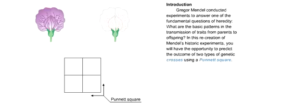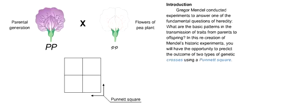Gregor Mendel conducted experiments to answer one of the fundamental questions of heredity: what are the basic patterns in the transmission of traits from parents to offspring? In this recreation of Mendel's historic experiments, you will have the opportunity to predict the outcome of two types of genetic crosses using a Punnett square.